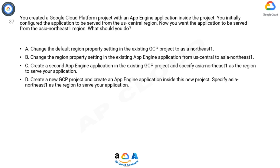Option D: Create a new GCP project and create an App Engine application inside this new project. Specify Asia Northeast 1 as the region to serve your application.